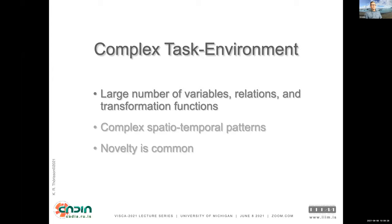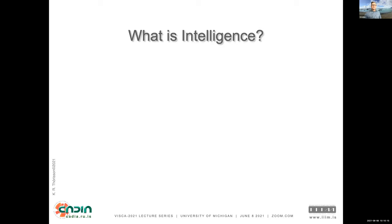We're interested in worlds that deserve the term 'complex task environments' — with a giant number of variables, relations, and transformation functions. There are complex spatial-temporal patterns that emerge out of the interaction between these, and novelty is the rule. That brings us to the question: what is intelligence? Our working definition, based on Pei Wang's research, boils down to this: figuring out how to get new stuff done.